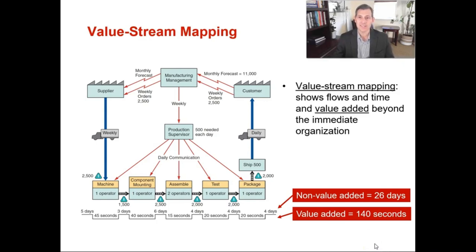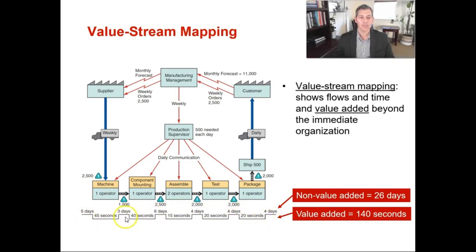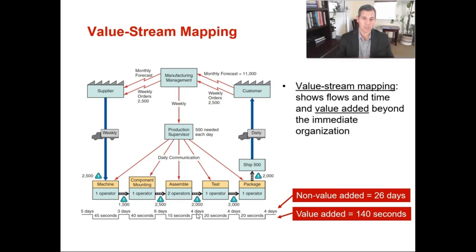Another process design tool is a value stream map. This takes the time function map but also adds your external supply chain — it can add your customers and shows the flows, time, and value added beyond your immediate organization. In this example, it's including the supplier and deliveries. It shows how much time on the top is non-value-added activities, whether that's waiting or shipping, and at the very bottom how much time is value-added. For this product taking weeks to be delivered, there's only 140 seconds of value-added activities in manufacturing. A value stream map shows value added beyond the immediate organization, including customers or suppliers.